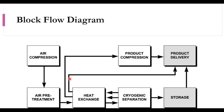If we talk about the block flow diagram, we will first discuss it in detail and then move to the process flow diagram. Air compression takes place using multi-stage compressors followed by air pretreatment, where CO2 and remaining water are removed. It is then heat exchanged in the multi-stream heat exchanger, where it exchanges heat with the products of the cryogenic section. The products from the cryogenic section are then further heated — one stream loses heat and the other gains heat.